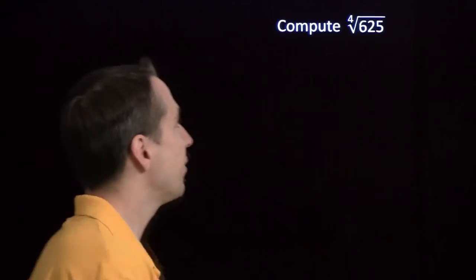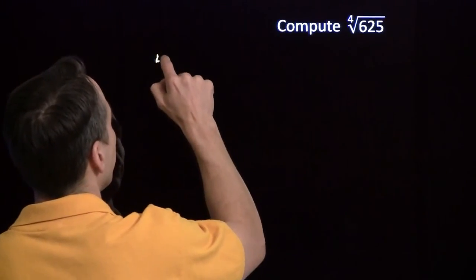Now that we know what radical notation is, I've got a couple practice problems to make sure we have it down. We'll start here with the fourth root of 625.